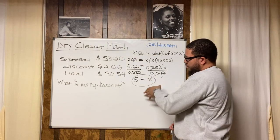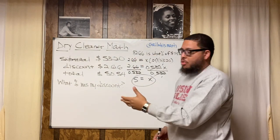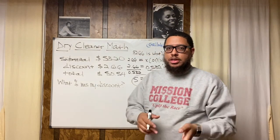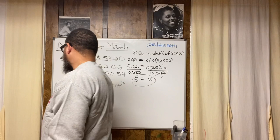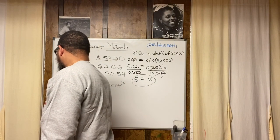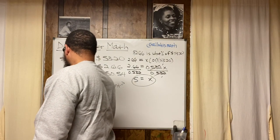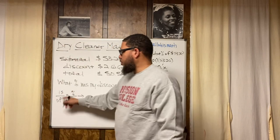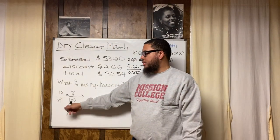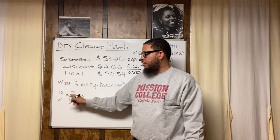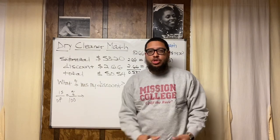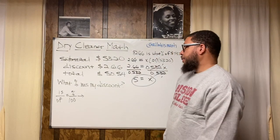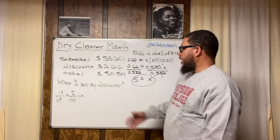Now I wrote it as a question, translated it into an equation, and worked it out. Now let's set it up as a proportion. The proportion model is: is/of = percent/100. Write this down and keep it in your notes — you can use this with any percent problem.